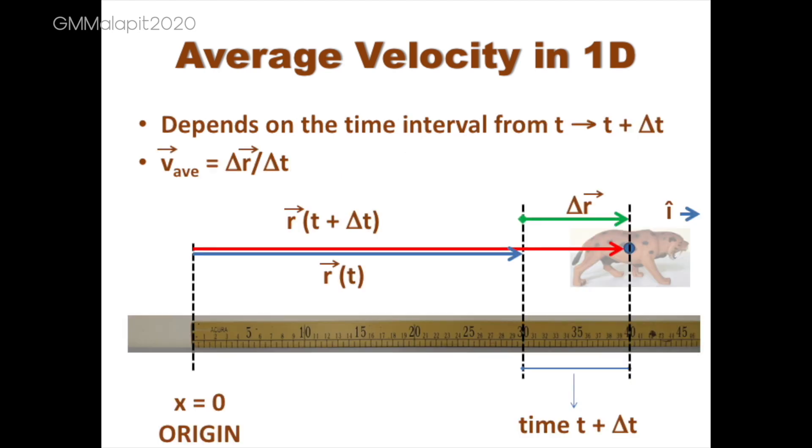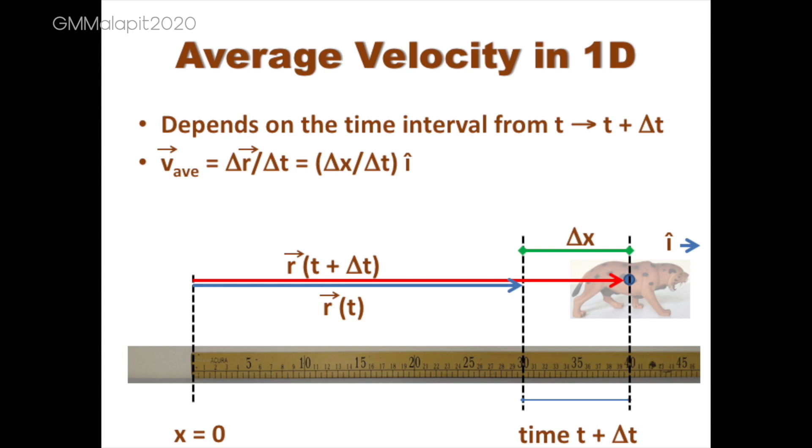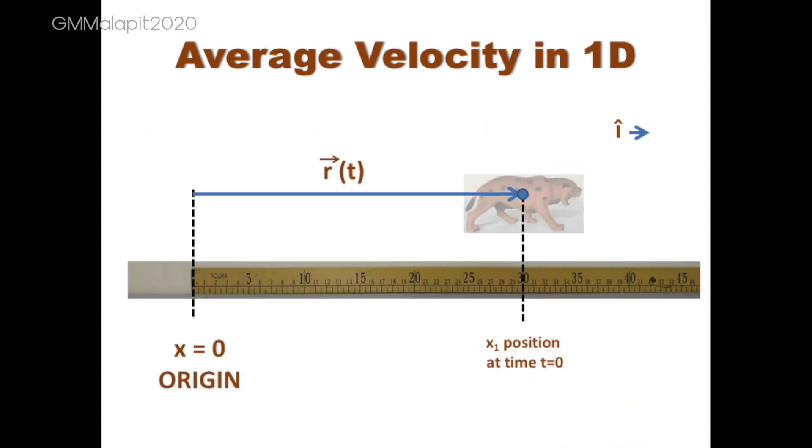V average is equal to the displacement vector delta r divided by the time interval delta t. Expanding, we have delta x over delta t i hat, where delta x over delta t is the component of the average velocity, which can either be positive, zero, or negative, and i hat is the direction of the component vector.